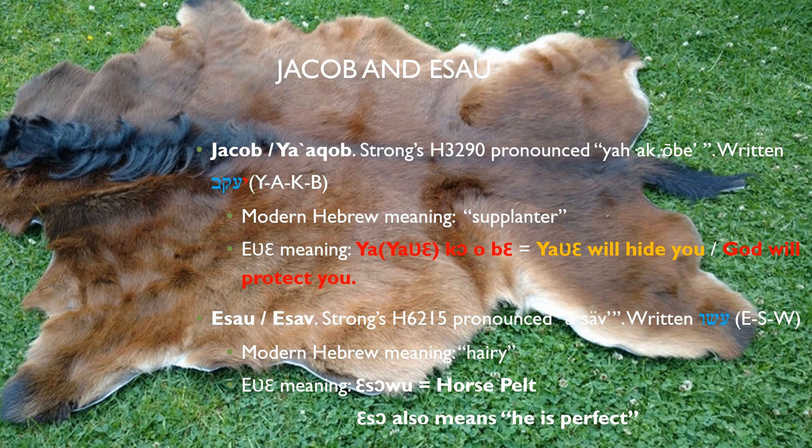It means 'horse pelt,' which indicates that he's hairy, and it also means 'he is perfect.' Remember, he is the first of twins to come out — the more robust and healthy, strong-looking one. So the parents would have said that he's perfect. Also, when the biblical text says that he came out red, keep in mind that in every culture, anyone who is fair-skinned is referred to as red. In Ewe, we say Amejain, meaning a red person — anyone who is fair-skinned. So this text tells us that Esau was fair-skinned, hairy, and perfect-looking as a young boy.